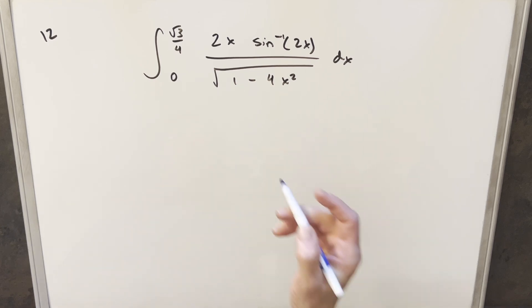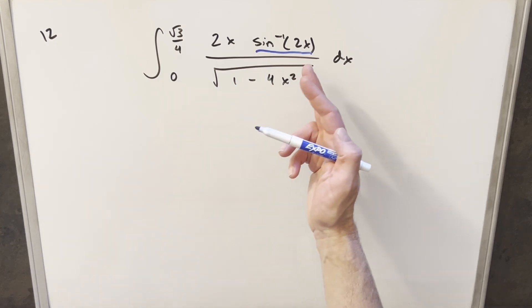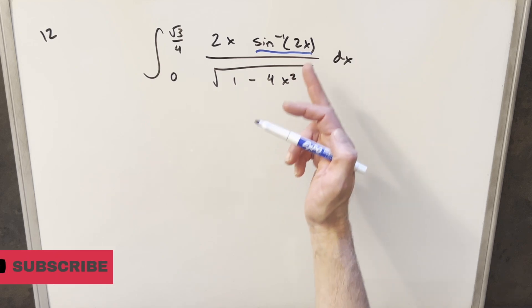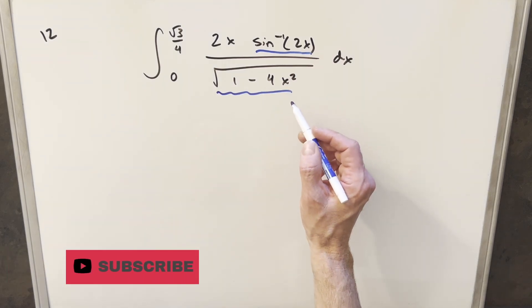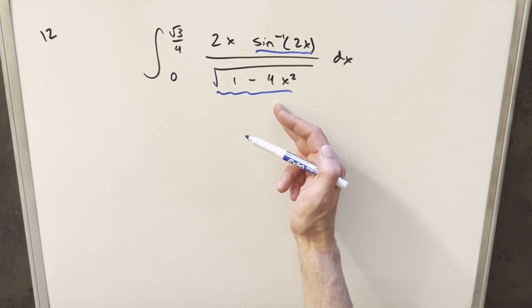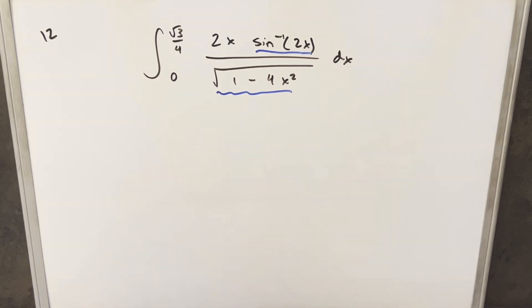Okay, the first thing I noticed looking at this is the fact that we have arc sine here in the numerator, but the derivative of arc sine 2x is actually exactly what we have here in the denominator. So this is making me think a u substitution could work here.